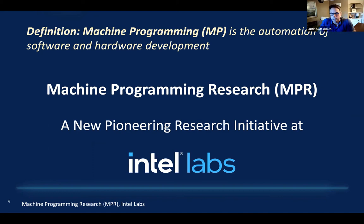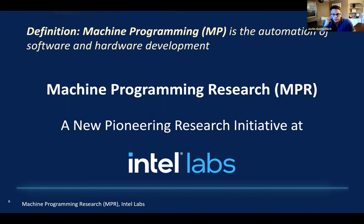Machine programming is really about the automation of the development of software and hardware. It's important to note that machine programming is not a rebranding of machine learning. We use machine learning techniques for machine programming, but we also use things like formal methods that don't require any machine learning at all. Originally this was about software development, but a byproduct of advances in machine programming is that we're now starting to automate hardware development.